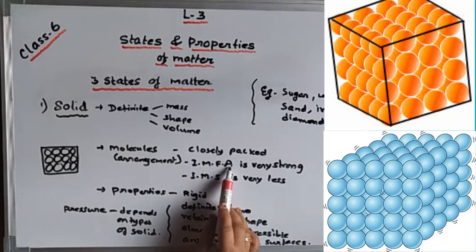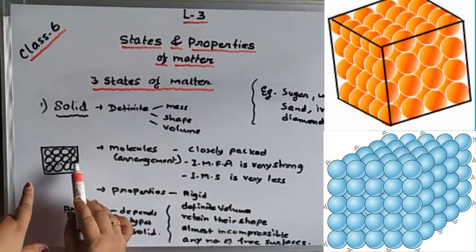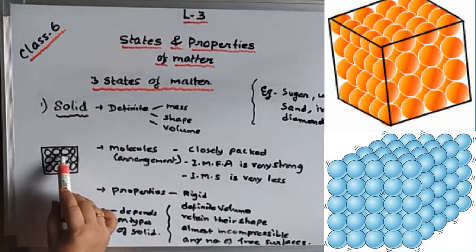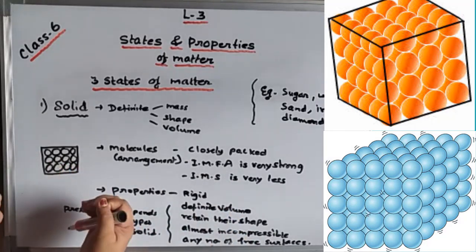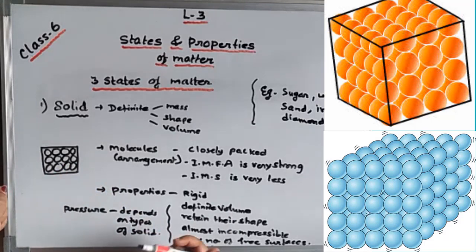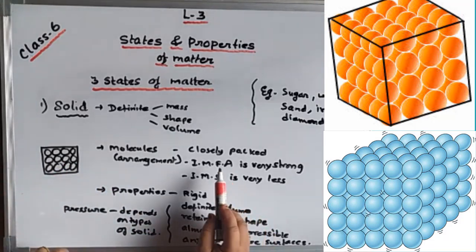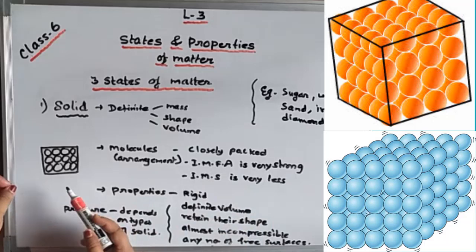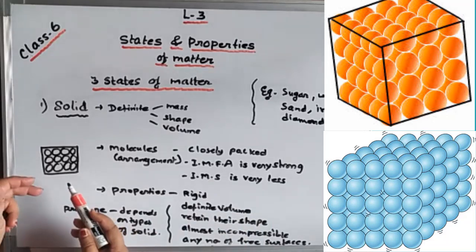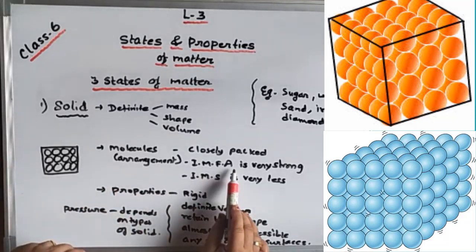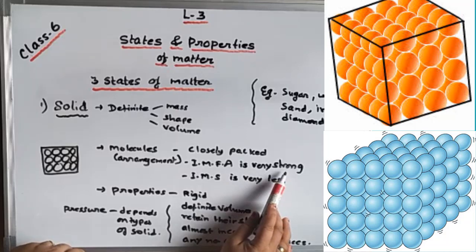IMFA stands for intermolecular force of attraction. In a solid, the intermolecular force of attraction is very strong — that's why the molecules are attracted towards each other, and it is very difficult to pull them apart. We need strong heating to make them move. So intermolecular force of attraction is very strong.